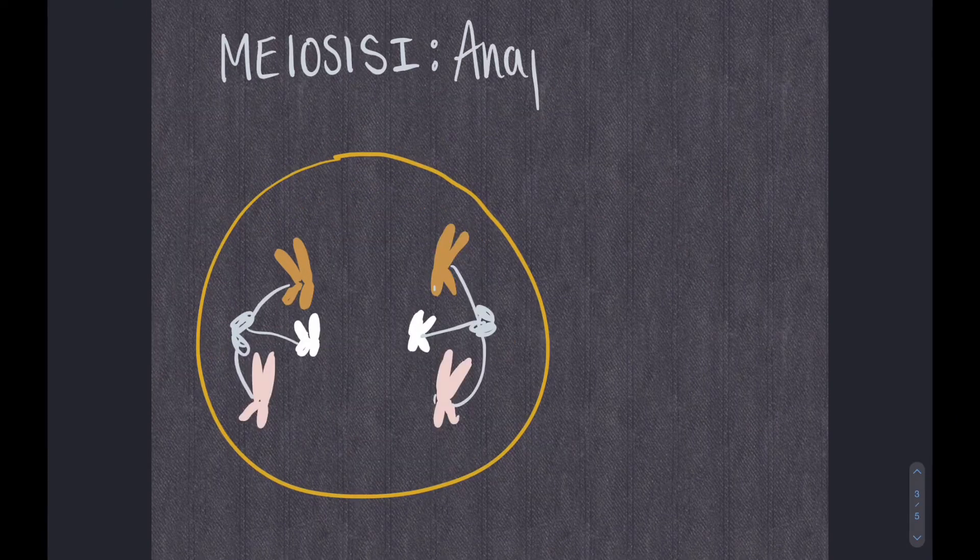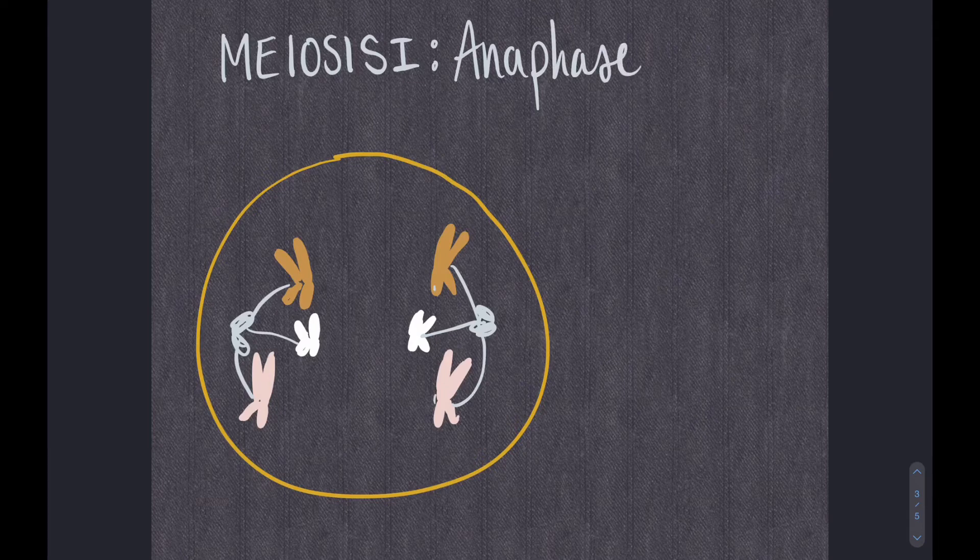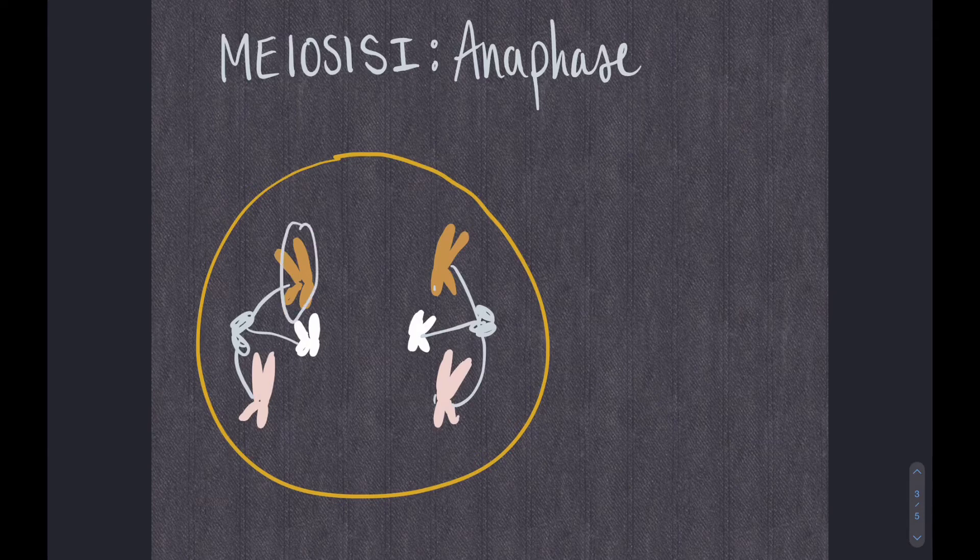Anaphase I is the next stage. In this stage, the microtubules pull the homologous pairs apart to opposite ends of the cell. Notice that the sister chromatids stay together.